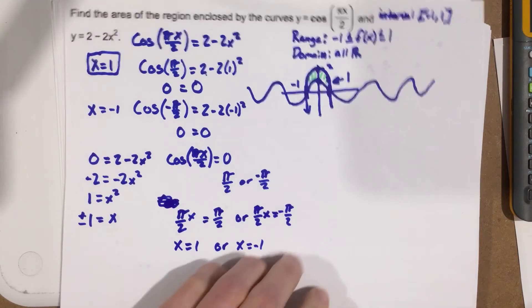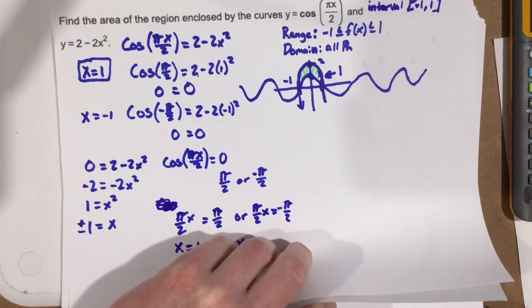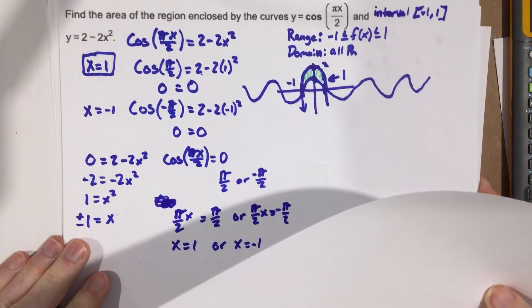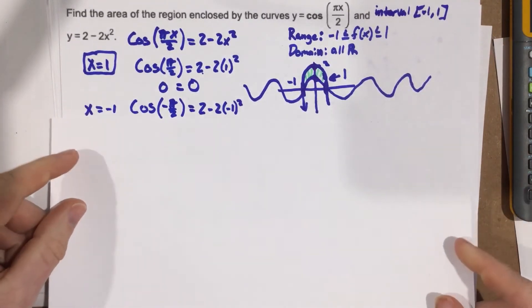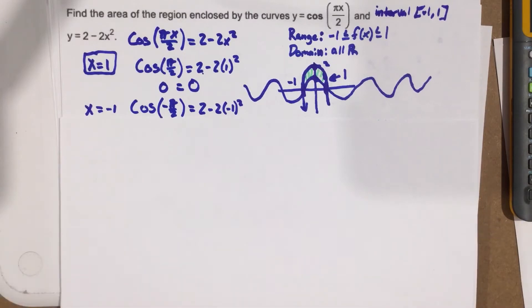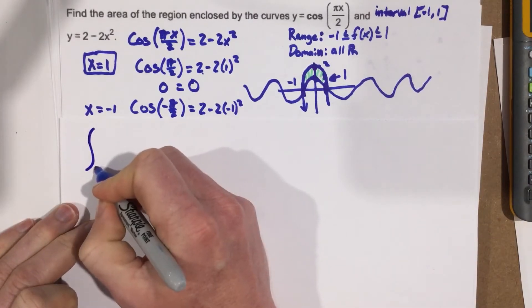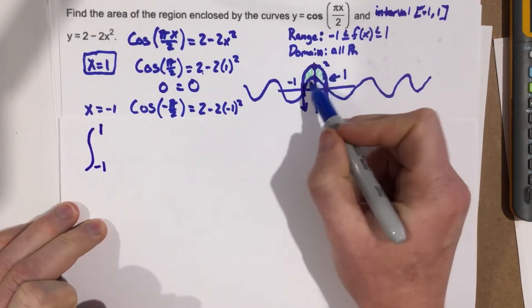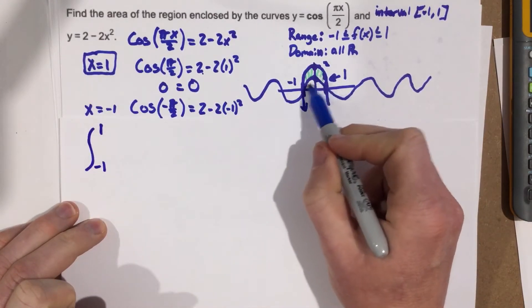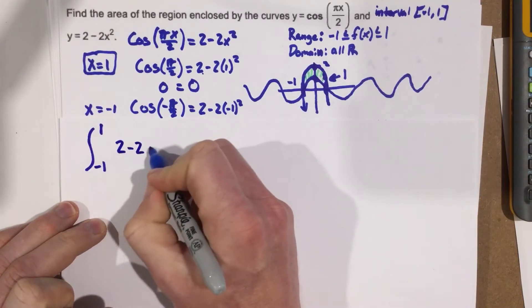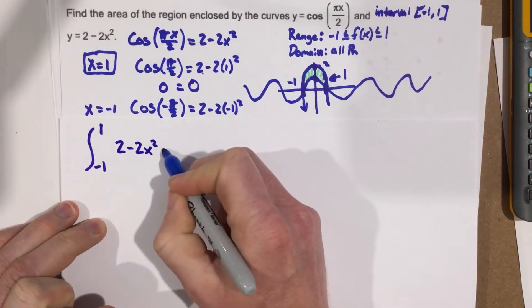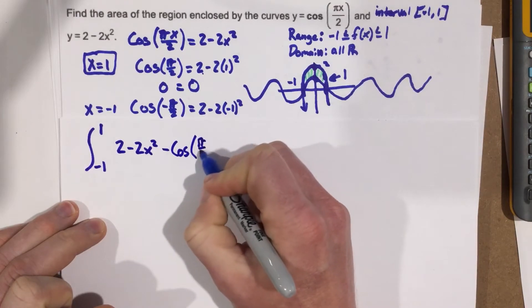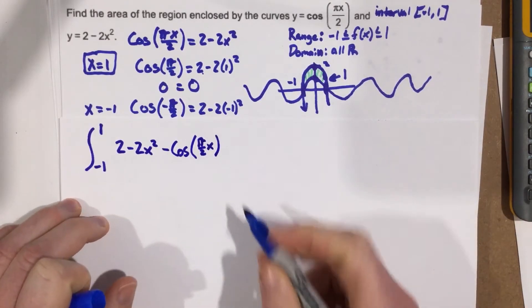Now that we know the interval is from negative 1 to 1, we're going to write the integral from negative 1 to 1. We know which function is on top and which is on bottom — it's f of x minus g of x. The top function is 2 minus 2x squared and the bottom function is cosine of pi over 2 times x, so we integrate that difference dx.